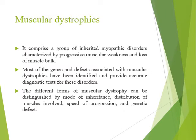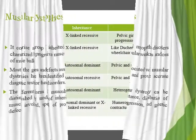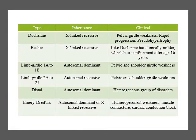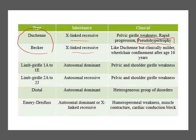Muscular dystrophies are a group of inherited myopathies characterized by progressive muscular weakness and loss of bulk. Definitive diagnosis and subtyping is usually by genetic testing. Duchenne and Becker are X-linked recessive, occurring in males, causing pelvic girdle weakness, rapid progression, and pseudo-hypertrophy especially of the calf muscles. Becker muscular dystrophy is milder — the heart is less commonly involved, there is no cognitive impairment, and patients remain mobile after age 16. In Duchenne, patients are confined to a wheelchair by age 13.